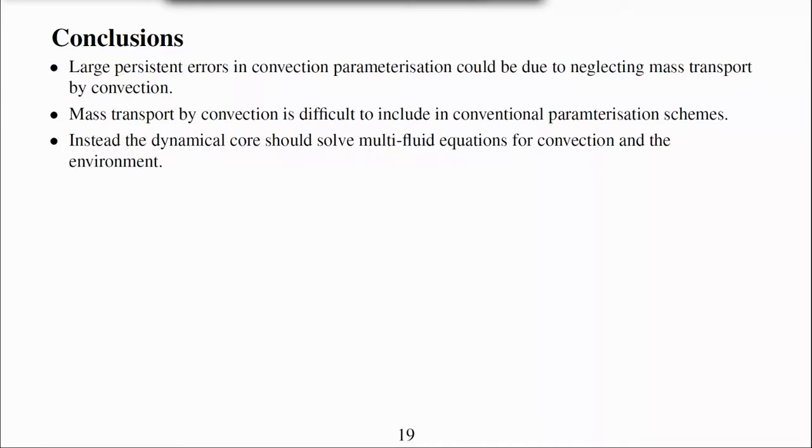To conclude, the large persistent errors in convection parameterisation could be due to neglecting mass transport by convection. However, mass transport by convection is difficult to include in conventional parameterisation schemes. Instead, the dynamical core should solve multi-fluid equations for convection and the environment, and possibly an additional fluid for downdrafts.